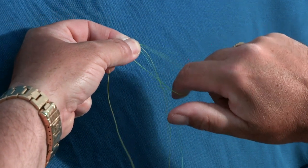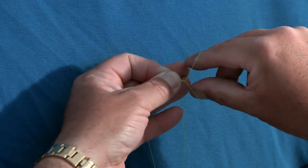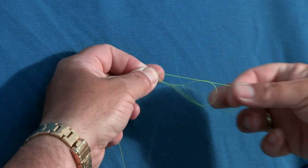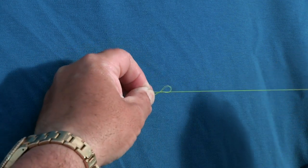Put your finger in and turn it twice on that loop. Then put your thumb in and pull the dropper and the main line through. Pull that up.